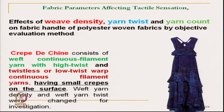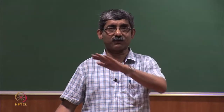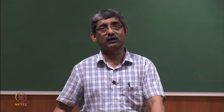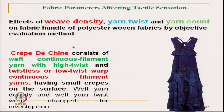Crepe de chine uses continuous filament with high-twisted weft yarn along with twistless or low-twisted warp yarn. This combination produces a small crepe structure at the surface. In this study, weft yarn density and weft yarn twist are the variables changed.